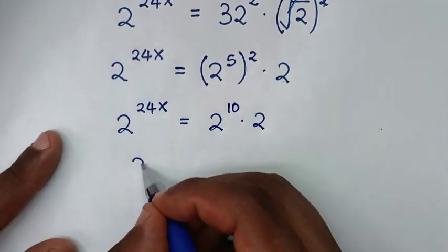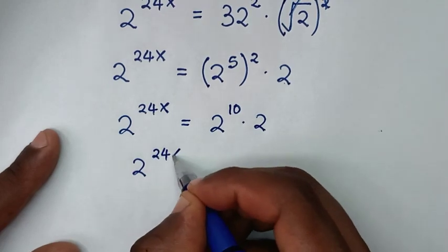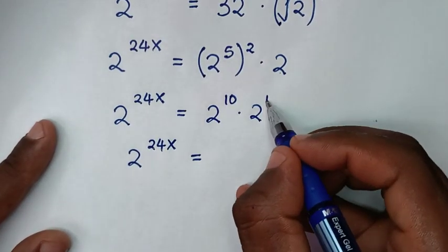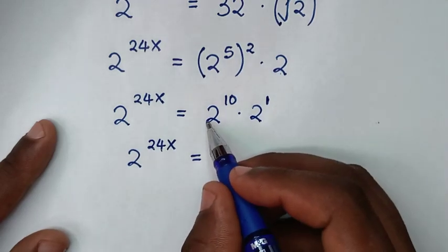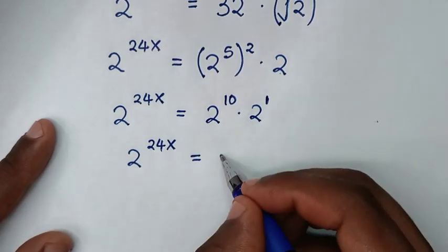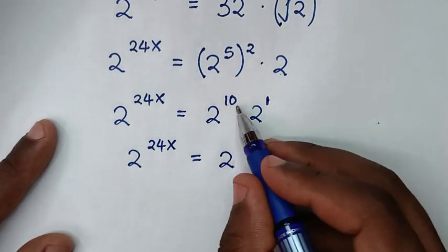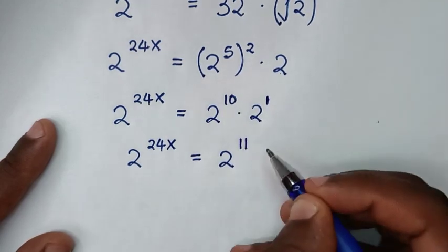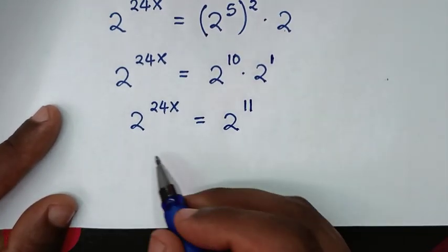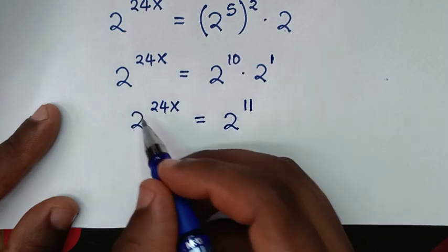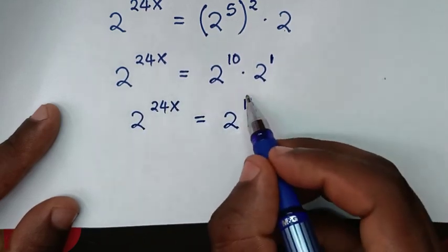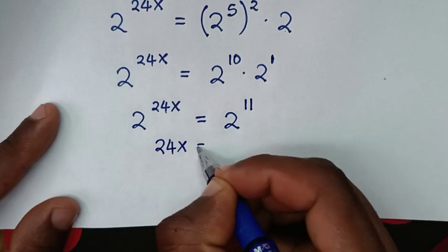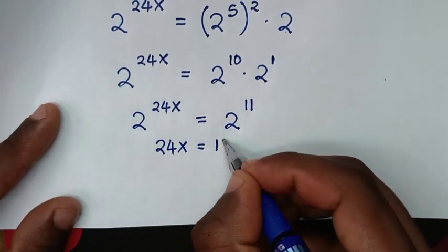So we have 2 power of 24x on the left side. On the right side, 2 is the same as 2 power of 1. Using the multiplication of exponents with the same base, we add the powers: 10 plus 1 equals 11. So 2 power of 24x equals 2 power of 11. Since the bases are the same, we compare the powers: 24x equals 11.